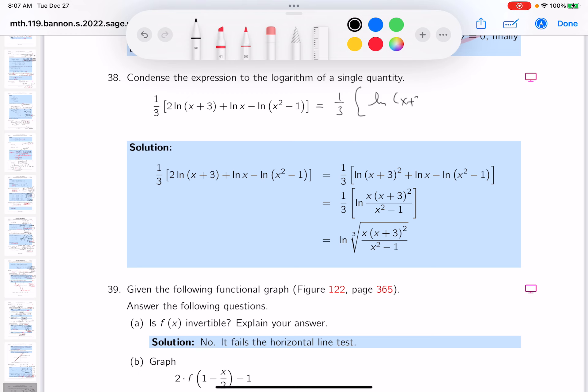of x plus three squared, then I see plus the natural log of x, and then I see minus the natural log of x squared minus one. I'm still going to work inside the parentheses. It's one-third